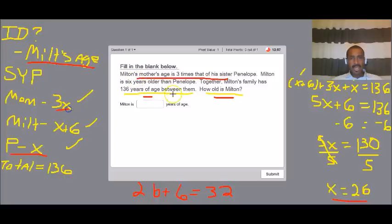We know that Milton is six years older than his sister. So that's Penelope's age plus six years more. That's Milton's age. And then Penelope is just good old X.